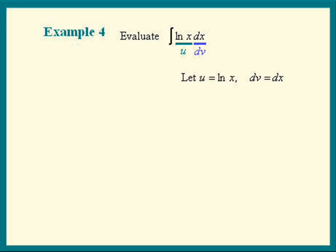du is the derivative of log x times dx. So we get 1 over x dx and v is obviously x.